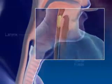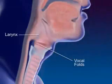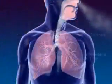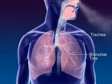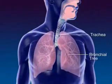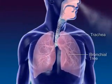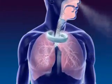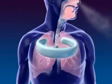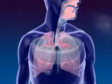The larynx, or voice box, contains the vocal folds. The trachea, or windpipe, connects the larynx to the bronchial tree. The cartilage rings of the trachea prevent the trachea from collapsing.